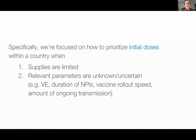Getting into the specifics, we started this project back in summer 2020, before we knew anything about vaccine efficacy or what distribution was going to look like. When we were developing this model, we were focused on how you should prioritize initial doses when supply is limited, looking within a country. The talk right before this was more focused on global allocation; we were just looking at prioritization within one area.